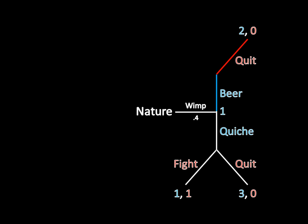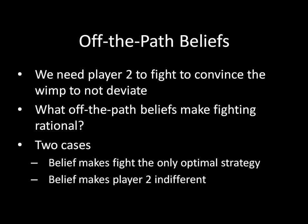The wimp's case is more complicated. He currently earns 2 in equilibrium. If he deviates, he could earn 1 or 3. Thus, to keep the wimp from wanting to deviate, we need to make sure player two fights often — that would give the wimp a payoff of 1, which is less than the equilibrium payoff. This is where we need to begin manipulating the off-the-path beliefs. Maintaining the equilibrium strategies requires player two to fight after observing quiche. The question turns to which off-the-path beliefs make fighting rational. Keep in mind that we have a degree of freedom here — the strategy is off the path, so we are free to pick whatever beliefs we want.